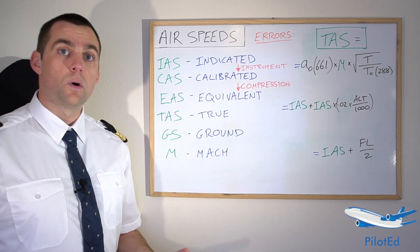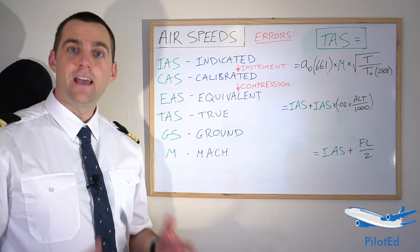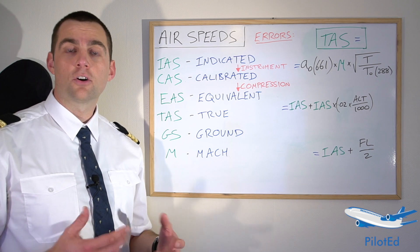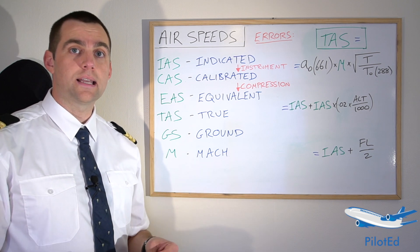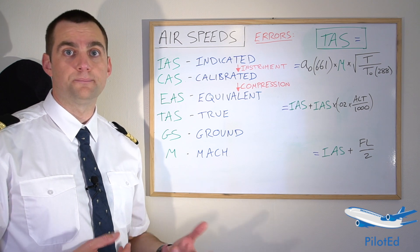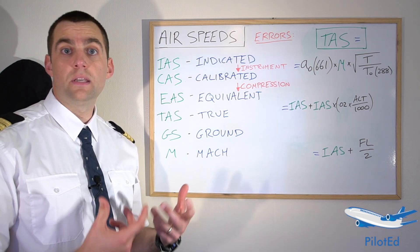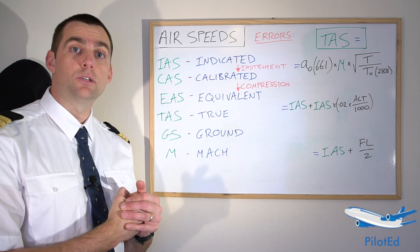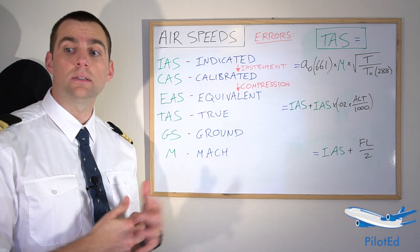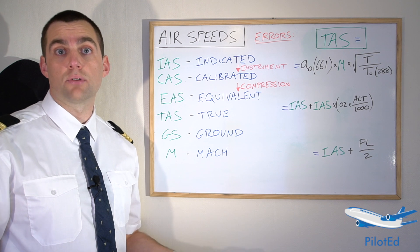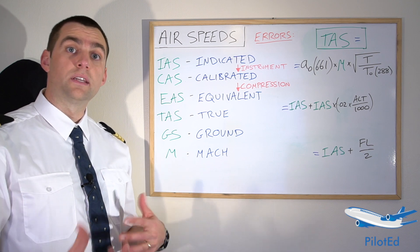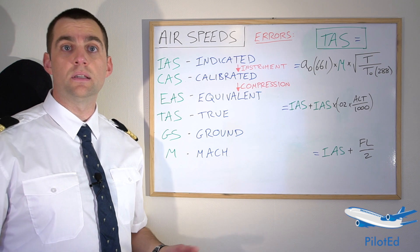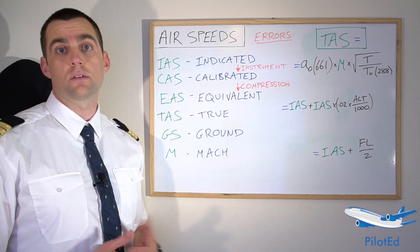Every aircraft is fitted with a pitot-static system, comprising a pitot tube and a static port, or more than one of each. The pitot tube measures pitot pressure — essentially the flow of air hitting that pitot tube, sometimes called ram pressure — and the static port measures static pressure. The airspeed is derived from the difference between the two. Simply put, indicated airspeed is what the airspeed indicator shows us.